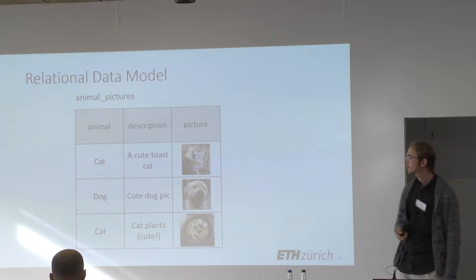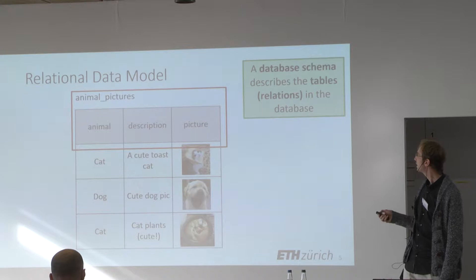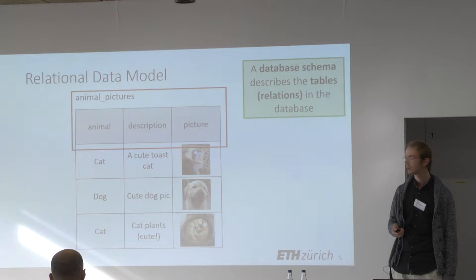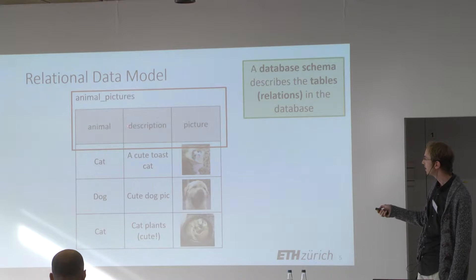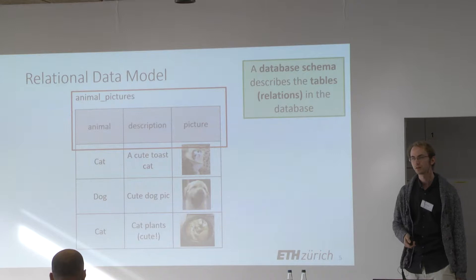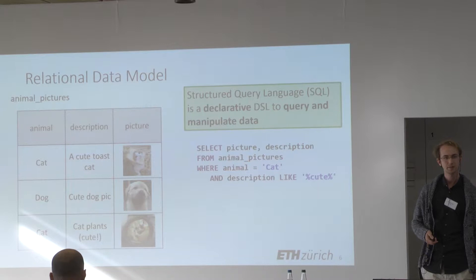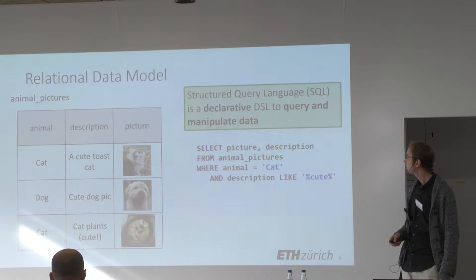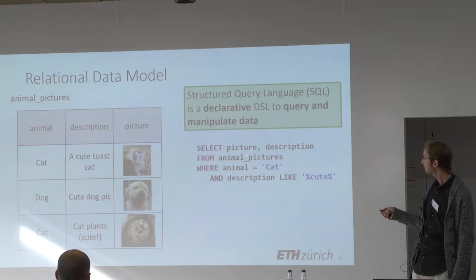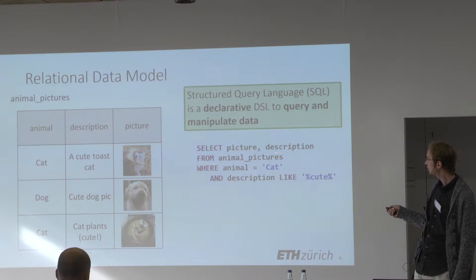These database management systems are all based on the relational data model. In the relational data model, we have a database schema that describes tables or relations. Here you can see an animal pictures table with three columns: animal, description, and picture, and three rows. To manipulate and query data, they provide a language called Structured Query Language, or SQL. Here is an example SQL query that fetches picture and description values from the animal pictures table where a specific condition holds.